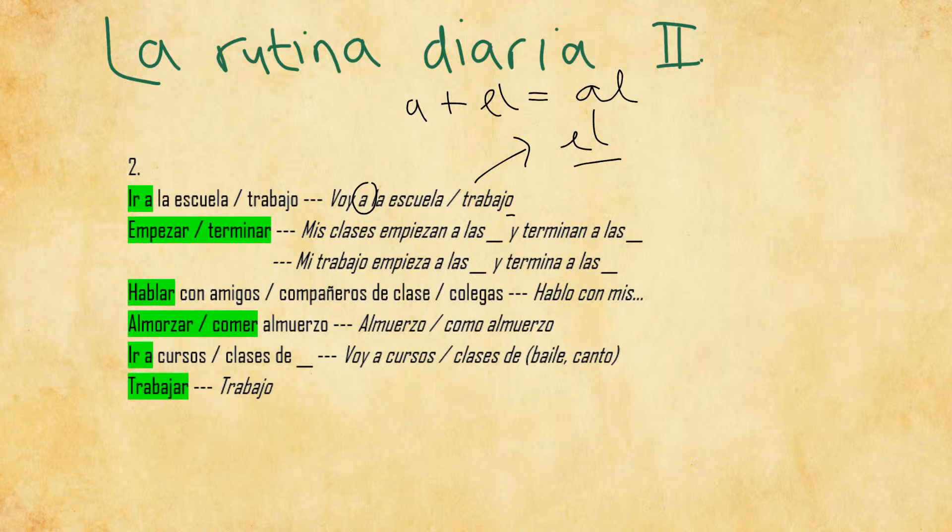Then you can say that your classes at school or your work starts at a certain point or at a certain time, and then ends at a certain time. For that we use the word empezar, which means to begin or to start, and terminar, which means to end. So we can say mis clases empiezan a las nueve y terminan a las cuatro, which means my classes start at nine and end at four. Or you can have a very similar sentence regarding your work: mi trabajo empieza a las ocho y termina a las cinco - my work starts at eight and ends at five.